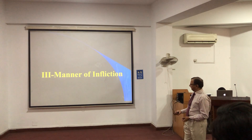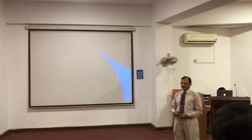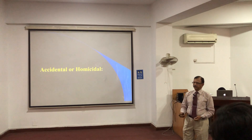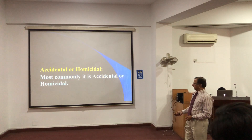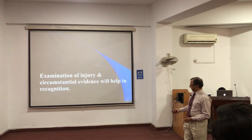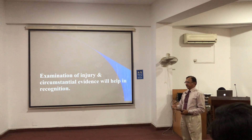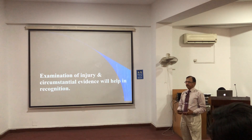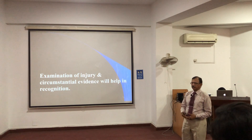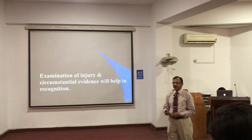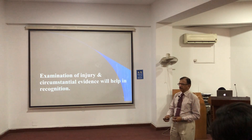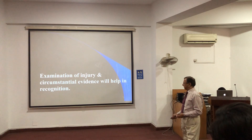Regarding the manner of infliction, usually they are accidental or homicidal. Most commonly accidental and homicidal, but the examination of the injury will tell you the pattern — the road traffic accident or the ligature mark of the infliction or the tying of the hand. The circumstantial evidence and the investigation will tell you about the manner of infliction.